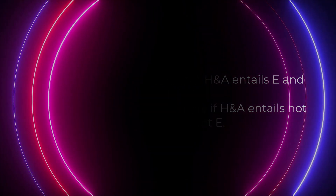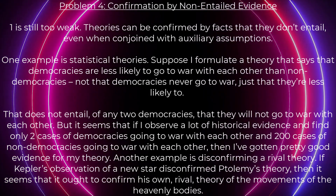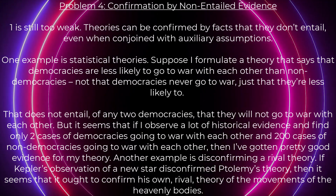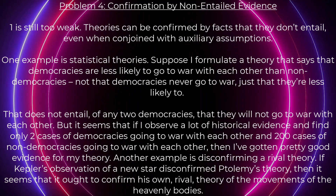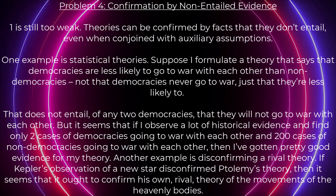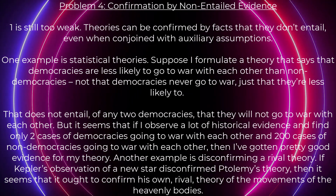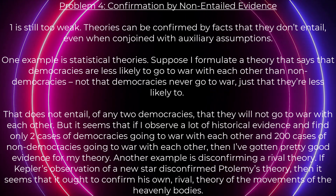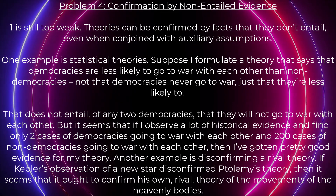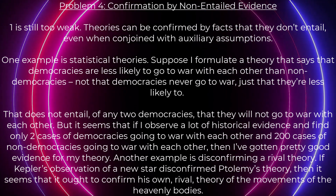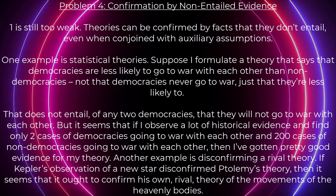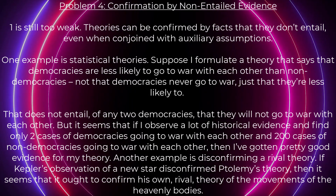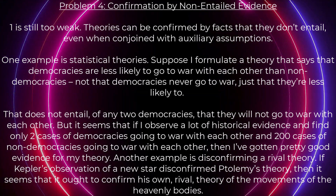Perhaps we can solve this by disallowing cases where A entails not-E by itself: H is confirmed by E if and only if H and A entail E, and A does not entail E; H is disconfirmed by E if and only if H and A entail not-E, and A does not entail not-E. Problem four: confirmation by non-entailed evidence. Condition one is still too weak — theories can be confirmed by facts that they don't entail even when conjoined with auxiliary assumptions. One example is statistical theories. Suppose I formulate a theory that says that democracies are less likely to go to war with each other than non-democracies — not that democracies never go to war, just that they're less likely to.